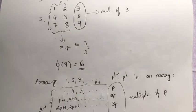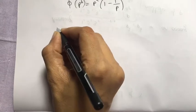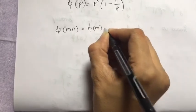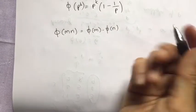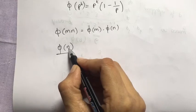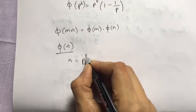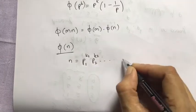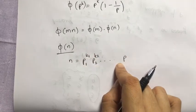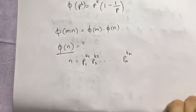The Euler phi function is a multiplicative function, meaning if we have to calculate phi(m × n), it equals phi(m) × phi(n). So if N has a prime factorization N = p1^k1 × p2^k2 × ... × pr^kr, then we can compute phi(N) using the formula.